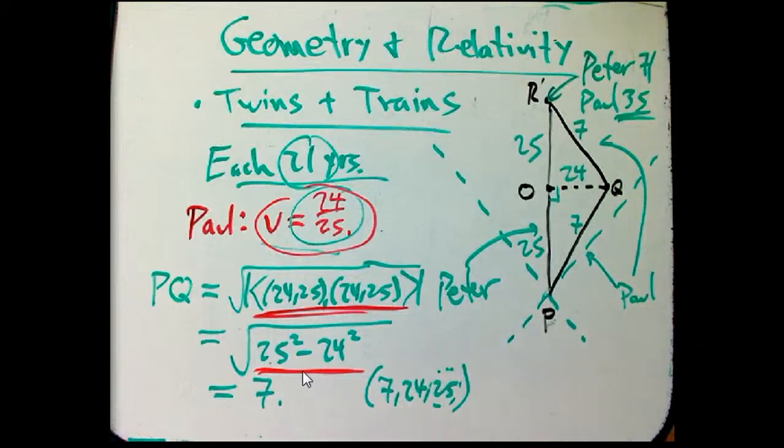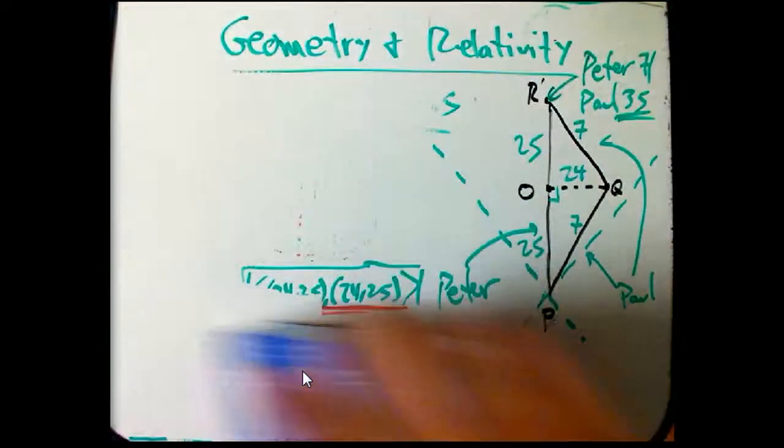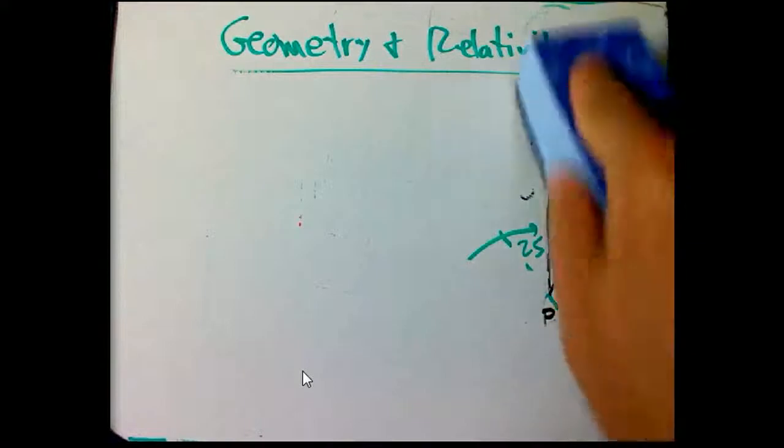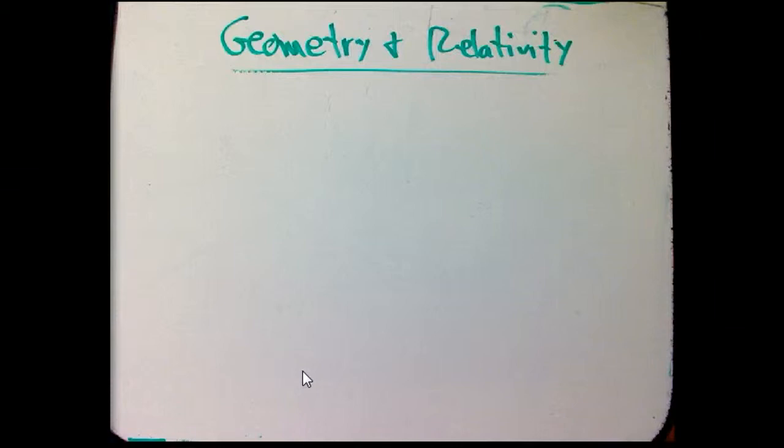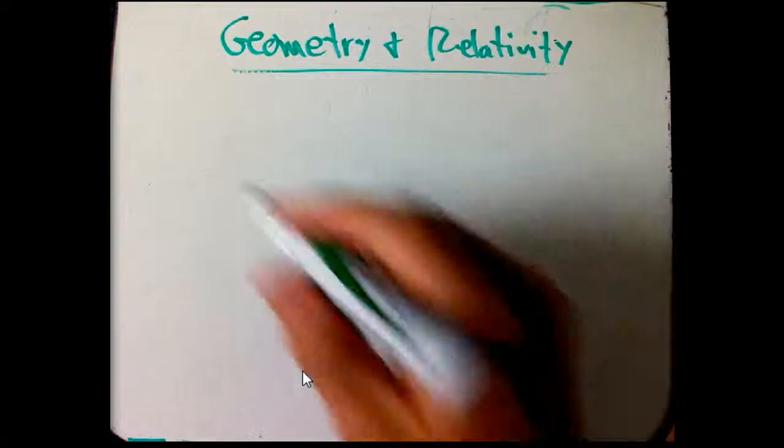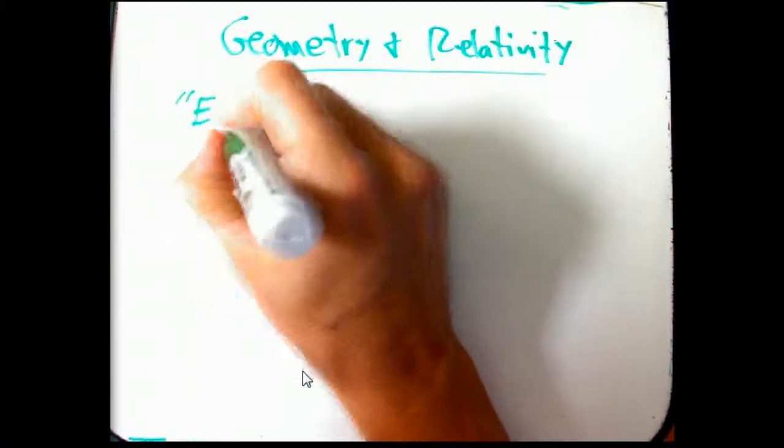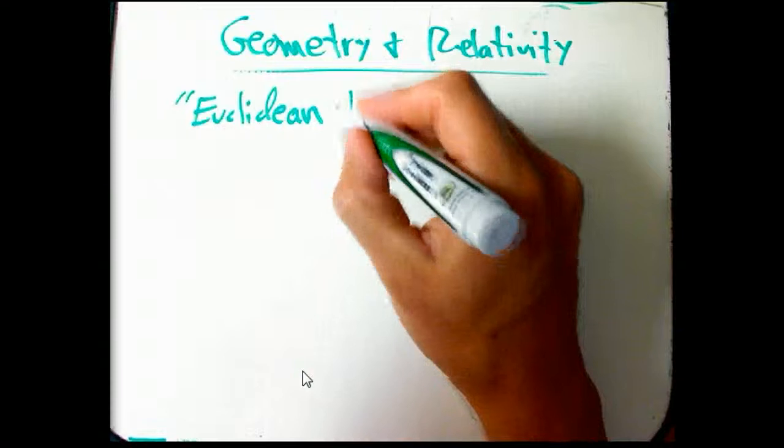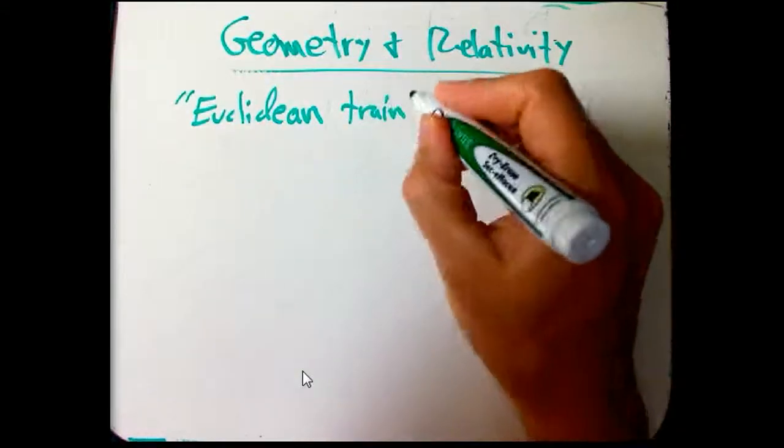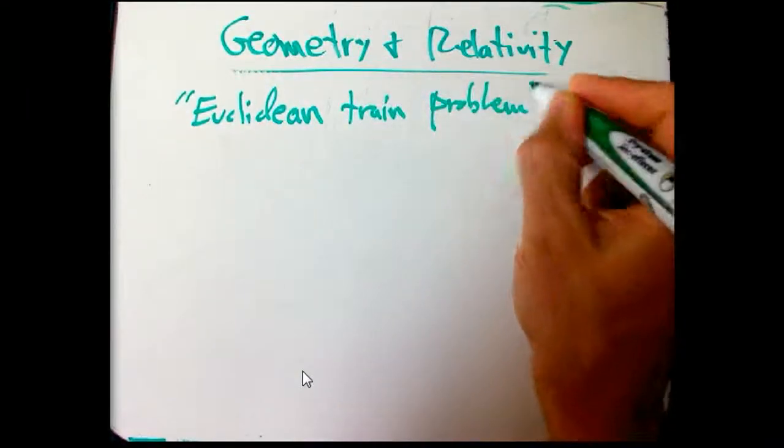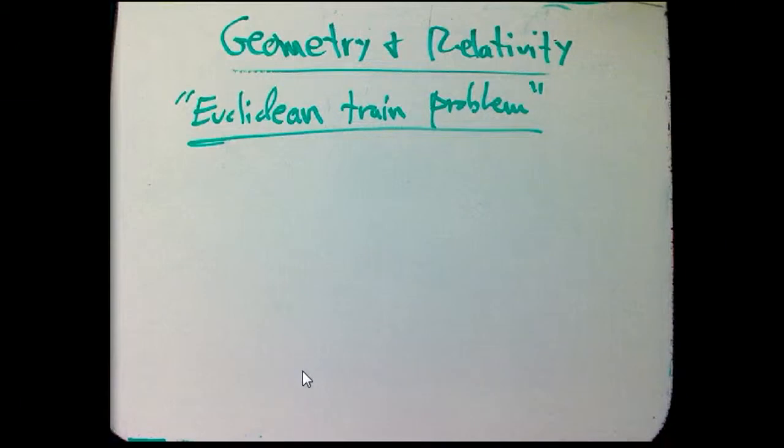Now, I want to do a more complicated example that gets at some of the things that, again, seem paradoxical about relativity. Classical example, it goes back to Einstein, although I don't know if he used the numbers of train in a station. But what I want to do first is I want to emphasize again the geometry here. And I want to do an Euclidean analog of a train problem. So it's going to not really have anything to do with trains in any obvious way. But we'll see how the Minkowski analog is going to be a train passing through a station.